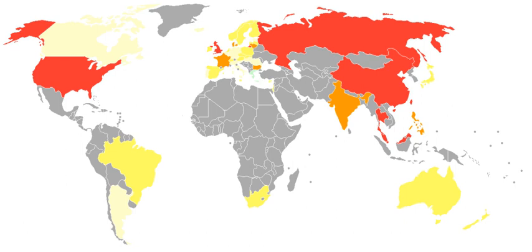Article 2, Section 10 of the Montana Constitution states that the right of individual privacy is essential to the well-being of a free society and shall not be infringed without the showing of a compelling state interest. In Washington, law enforcement are required to obtain a warrant before using IMSI catcher technology, and private individuals' text messages are protected from warrantless searches.